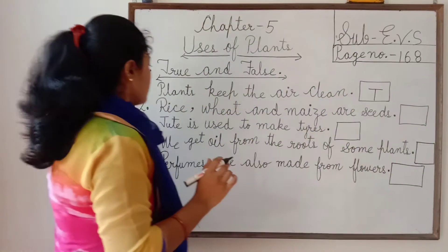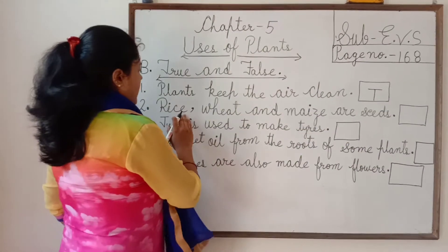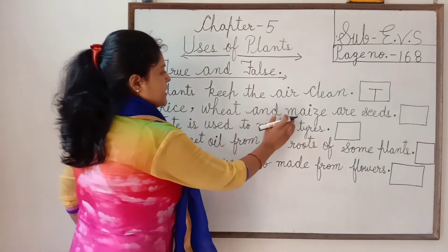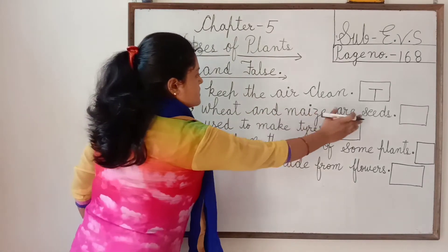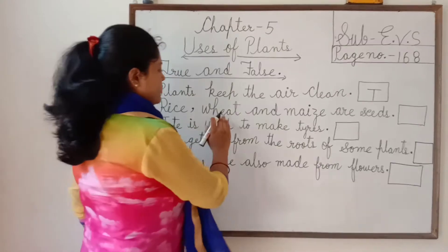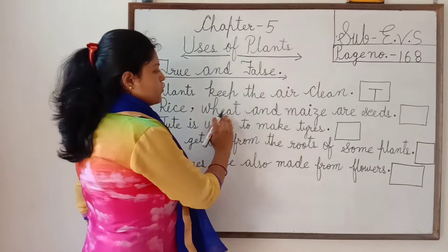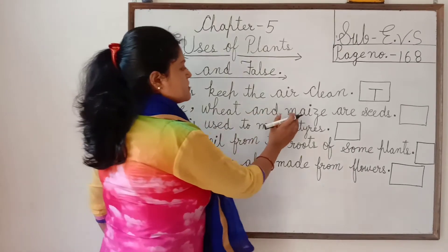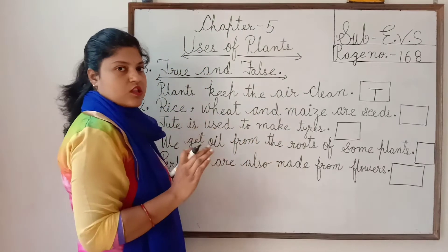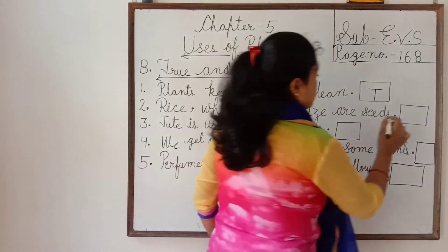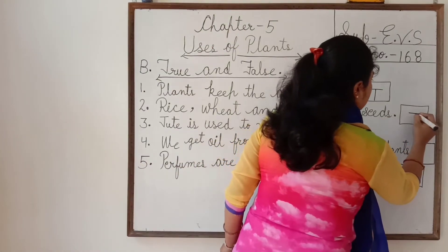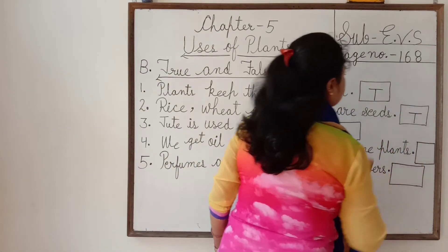Question number 2: rice, wheat and maize are seeds. Students, rice, wheat (gehu) and maize (makkah) — seeds hote hai? Yes, the answer is true. So, right here, true.